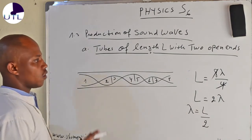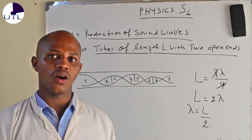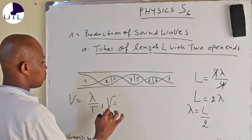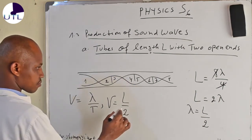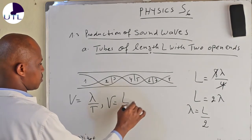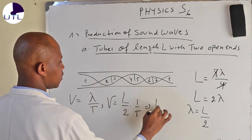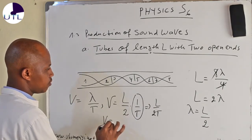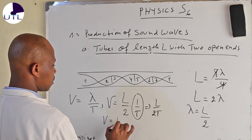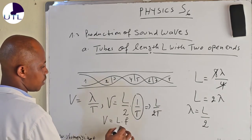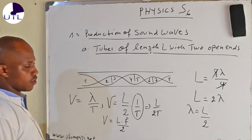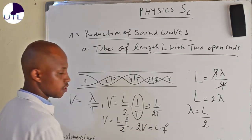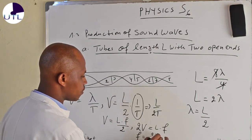Now let us use this example to find the velocity. We are using the formula where speed equals wavelength divided by period. The speed equals wavelength — that is length over 2 — times 1 over period, giving length over 2T. Since 1 over period is frequency, V equals length times frequency divided by 2. By cross multiplication, 2 times V equals length times frequency. Therefore, frequency equals 2 times V divided by the length.